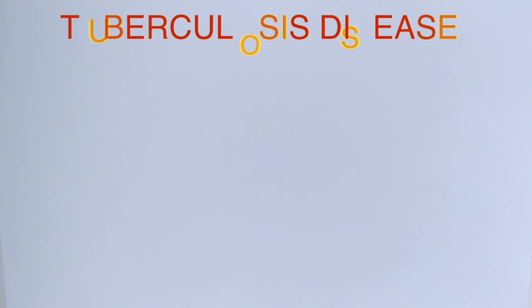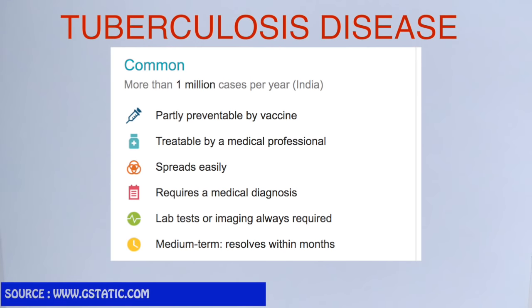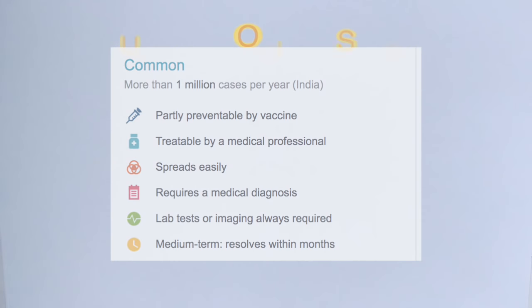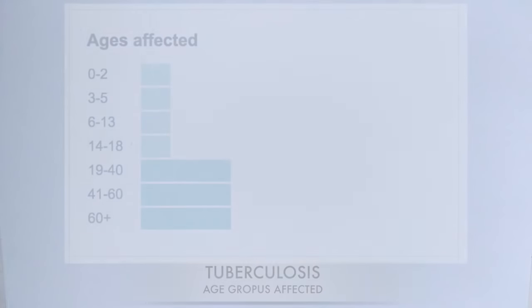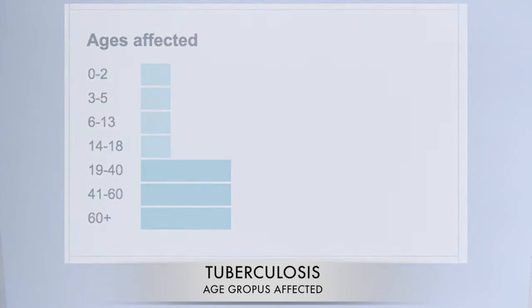Tuberculosis causes 1 million cases per year despite good healthcare being available. In this chart you can see the age groups affected throughout the globe by this tuberculosis disease.